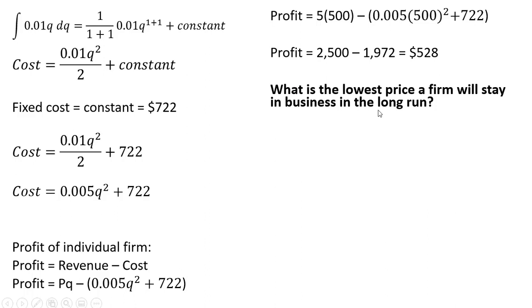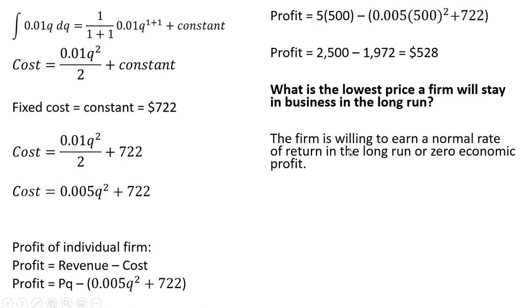Now let's find the lowest price a firm will stay in business in the long run. So what is the lowest price a firm will stay in business in the long run? The firm is willing to earn a normal rate of return in the long run, or zero economic profit. That'll occur where price equals the minimum point on the average cost curve. So here's our average cost equation. How did I get that? I just took the cost equation and divided it through by q. So that's average cost.